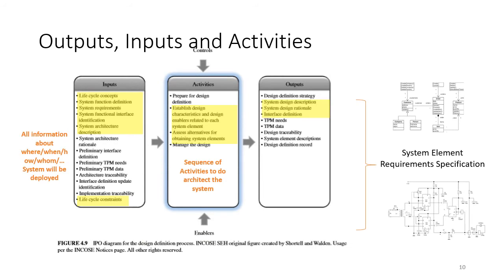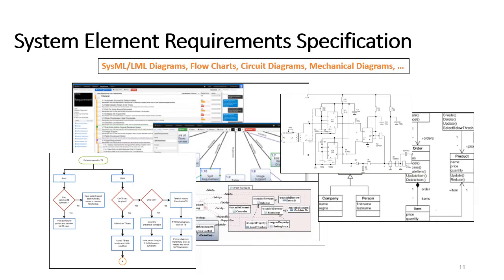The process has outputs, inputs, and activities. The output is a system element requirement specification, established by developing alternate designs and trading off the benefits of each one. The inputs are all of the documents and information that came before — from business to stakeholder to requirements to architecture. The system element requirement specification is typically diagrams with associated text; circuit diagrams, flow charts, and mechanical diagrams are the kinds of things expected as a result of the design document.